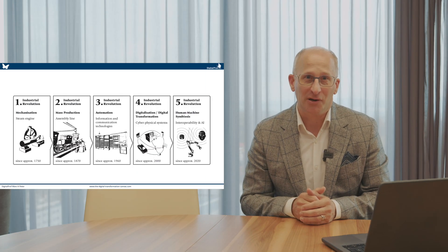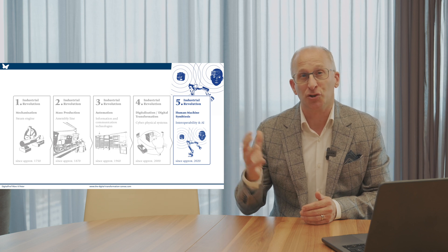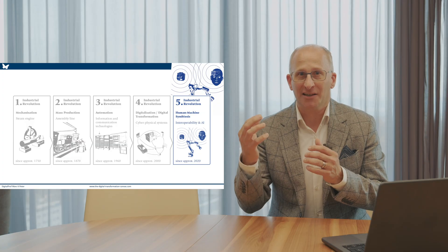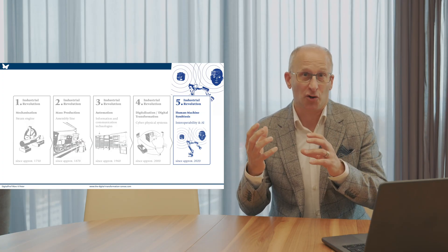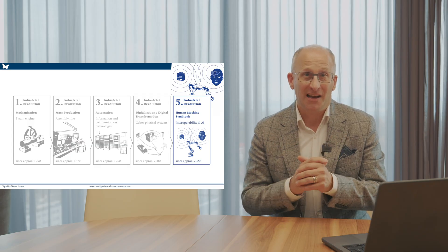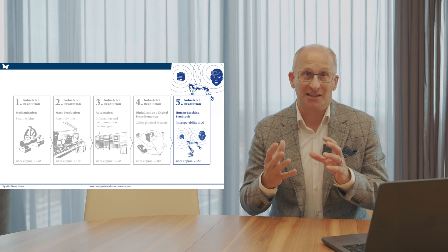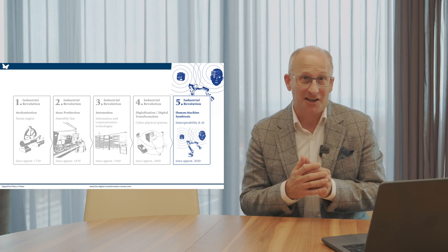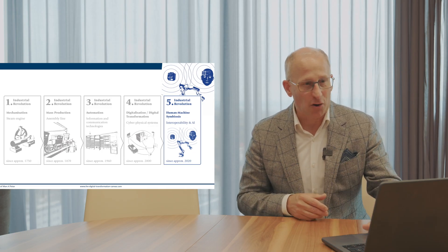We have seen in the previous episodes that the fifth industrial revolution is characterized by interoperability — the ability to connect everything with everything — so we can exchange data, but we also can collect and analyze data for the purpose of AI. AI as a digital technology drives this fifth industrial revolution, which we have since the 2020s as a dominant topic in strategy development.